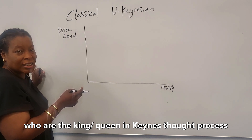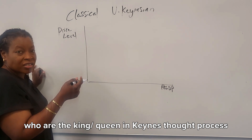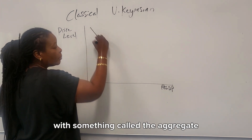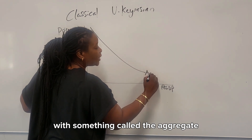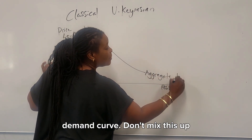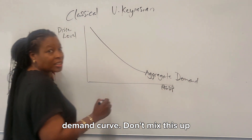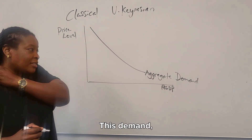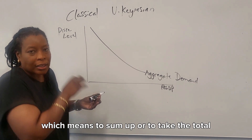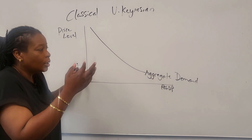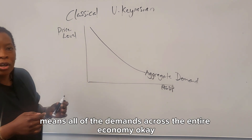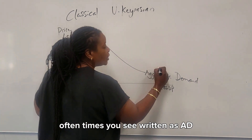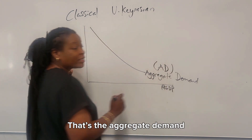Keynesian economics — what's their focus? That's right, it was demand. So we summarize that with something called the aggregate demand curve. Don't mix this up with your individual demand curve for markets. Aggregate demand means to sum up or take the total — all of the demands across the entire economy. That's why it's called the aggregate demand curve, often written as AD.